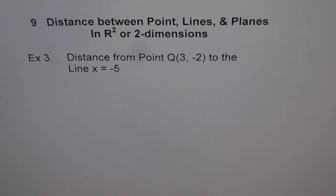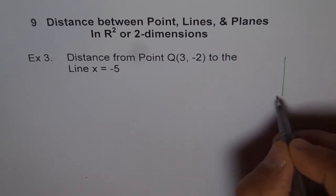Example 3. Distance from point Q to the line x equals minus 5. Well, that is a very simple problem but let's try to make it complicated.